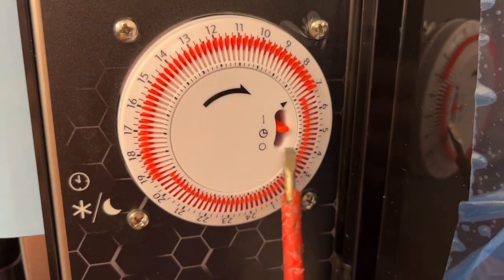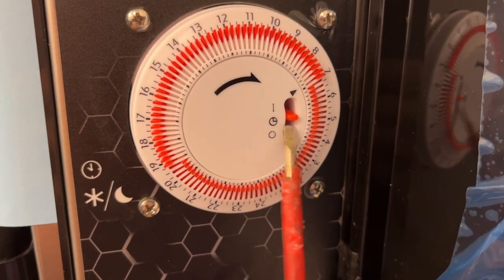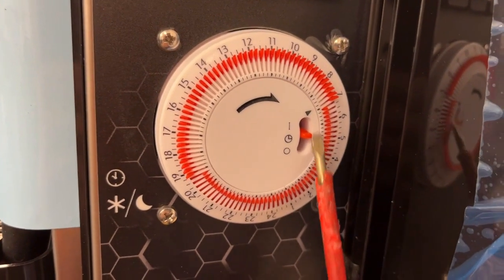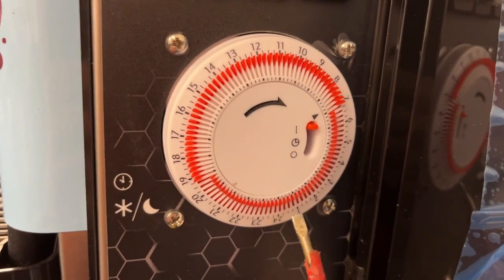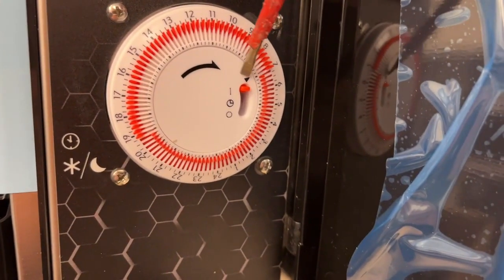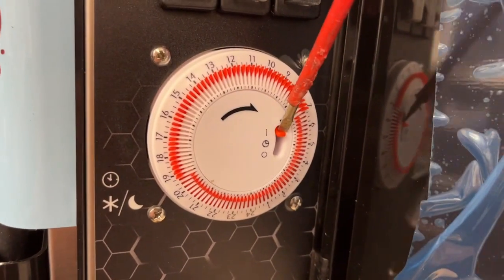If that one is set to the timer, the timer to the clock, the timer will control it. If we put this one in 1, it will produce slush all day and night. And if we put it to 0, it will be liquid, it will be chilled only.